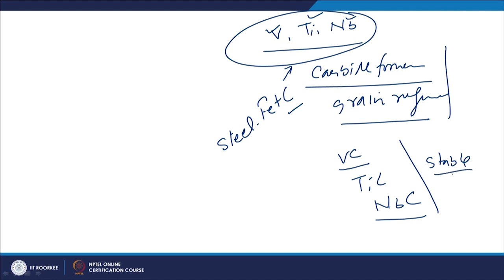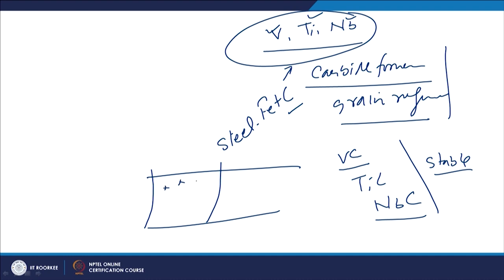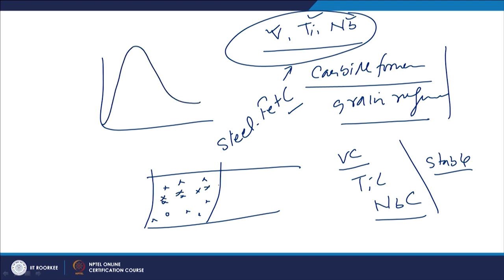These stable carbides do not decompose easily during welding under the effect of the weld thermal cycle. The carbides present in the matrix do not dissolve easily due to the weld thermal cycle experienced at different locations. Because of their good thermal stability and resistance to thermal decomposition at high temperatures, unless very long exposure at high temperature is given, the carbon is consumed by these carbides and the actual carbon content in the steel is reduced.